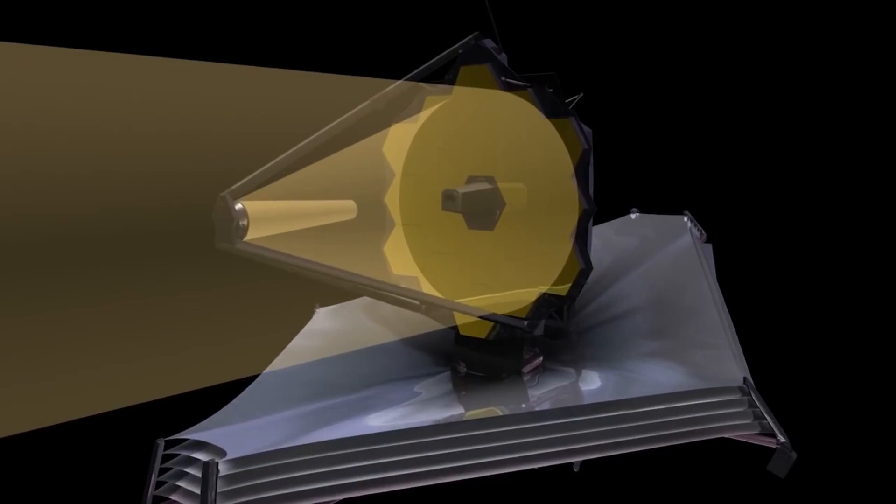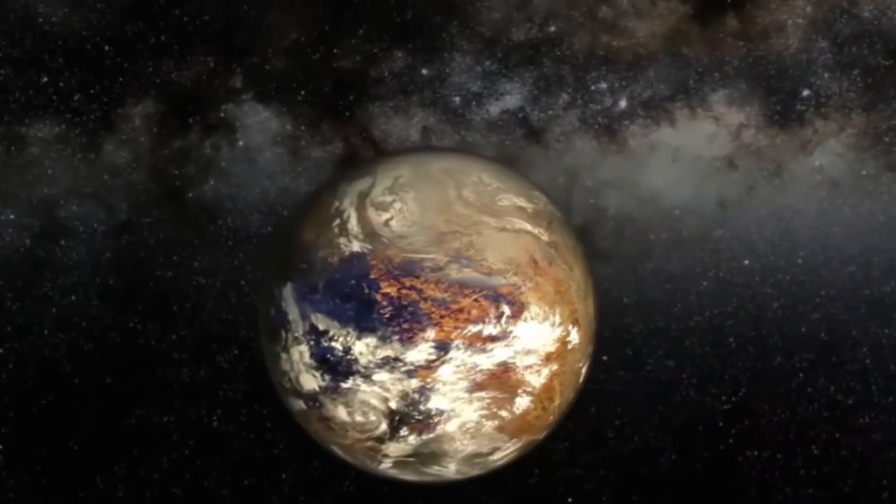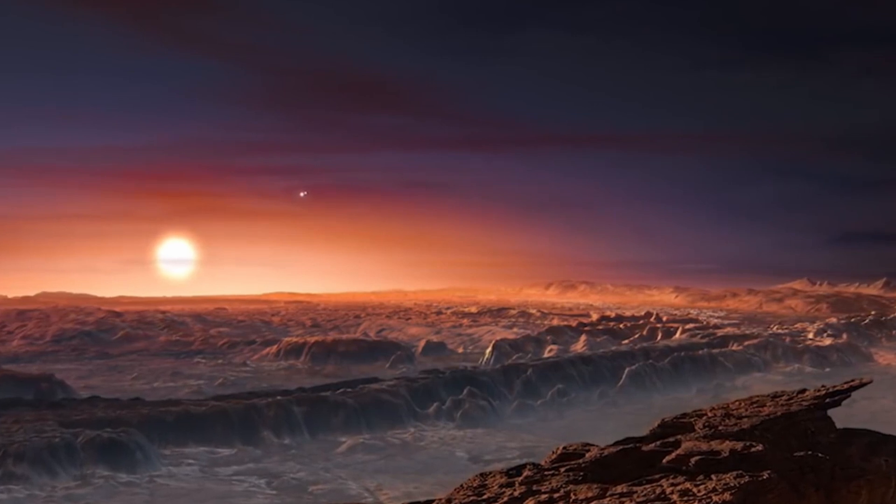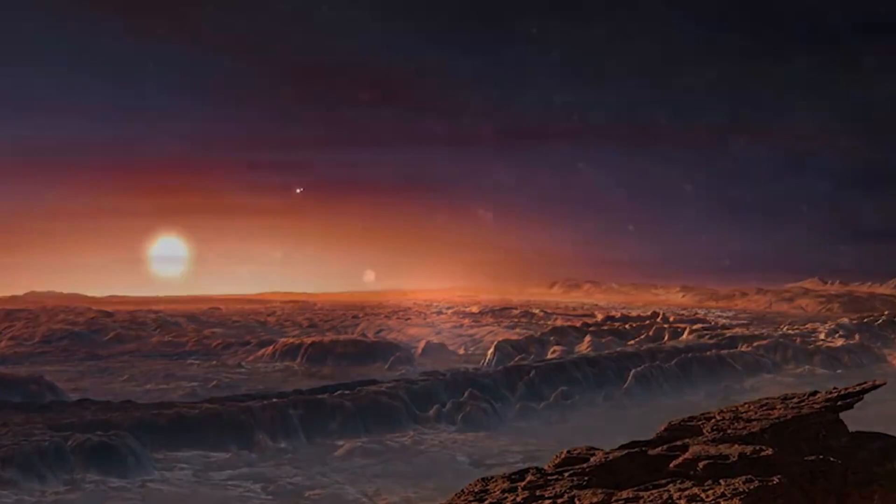Because of its potential to support life, Proxima b is one of the most exciting exoplanets. Its existence in the habitable zone of its star means that water could exist on its surface, a key ingredient for life as we know it.